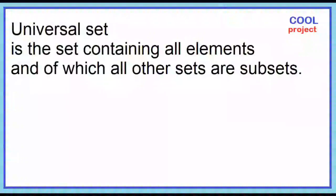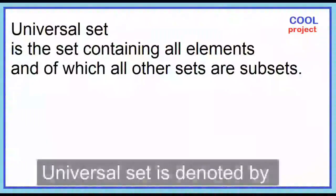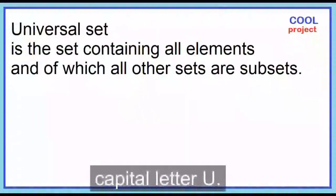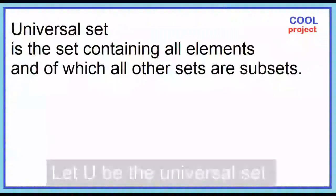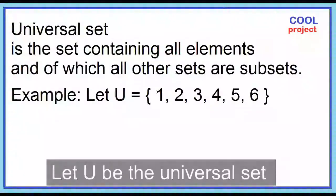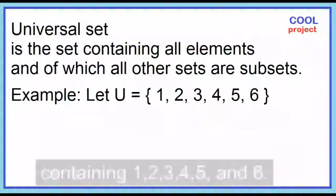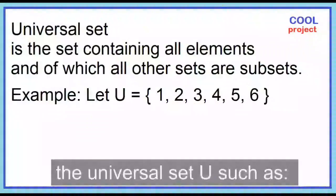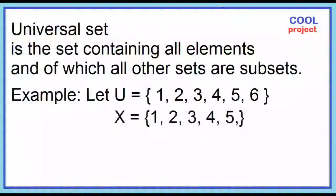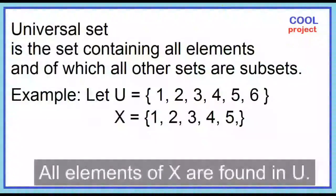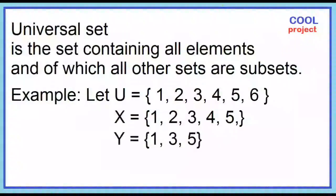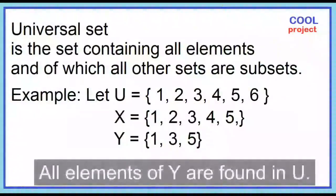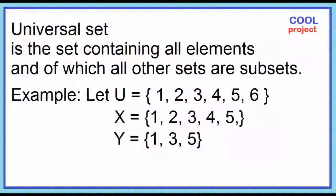Universal set is the set containing all elements and of which all other sets are subsets. Universal set is denoted by capital letter U. Let U be the universal set containing elements 1, 2, 3, 4, 5, and 6. Other sets can be formed from the universal set U, such as set X and set Y, whose elements are all found in U.